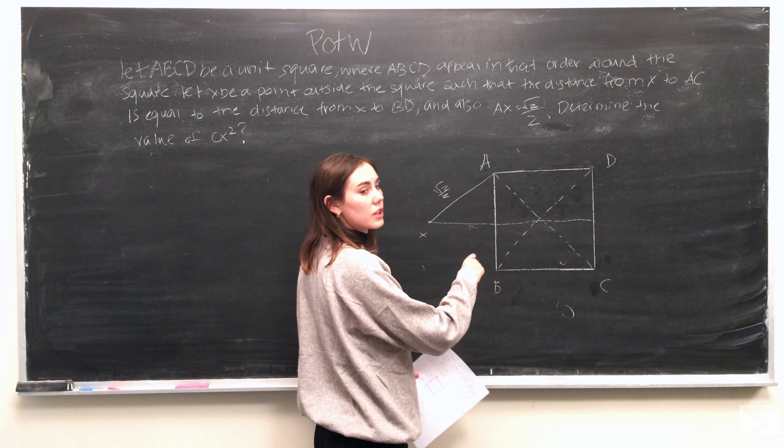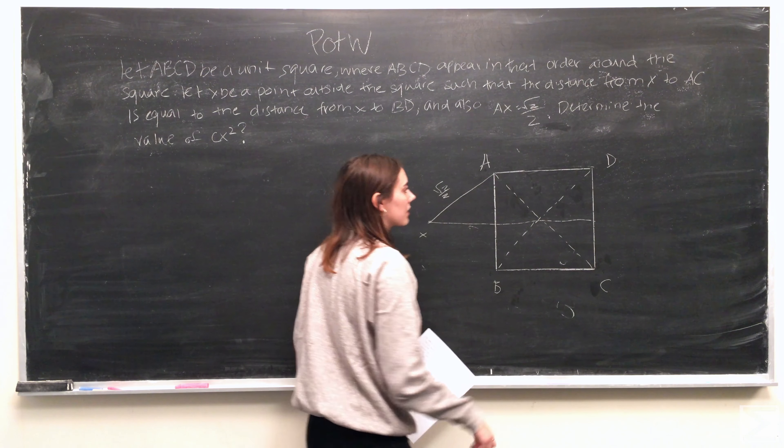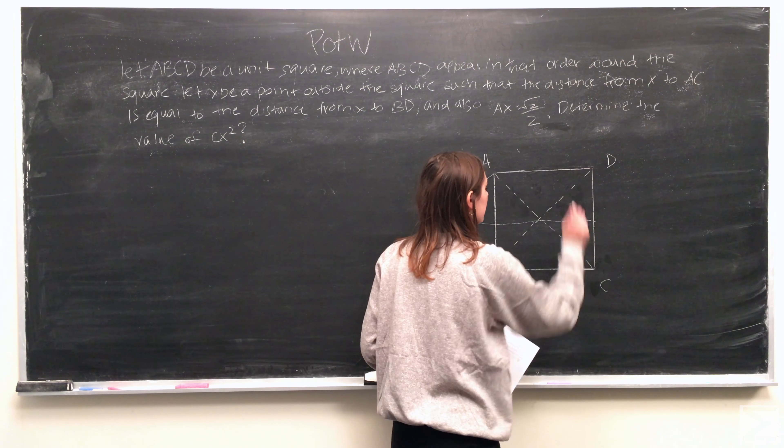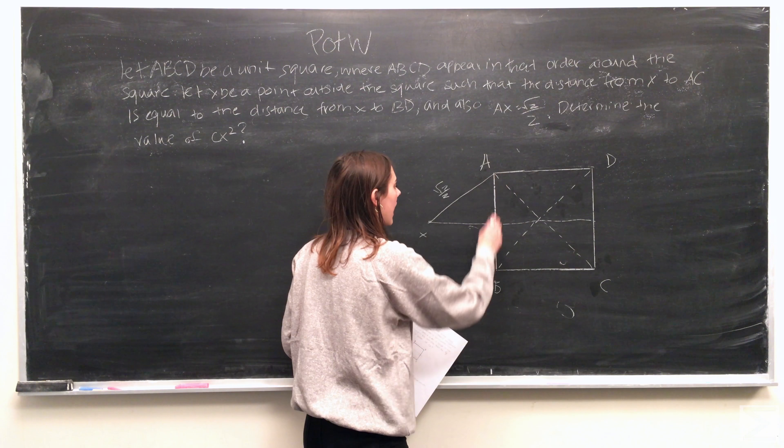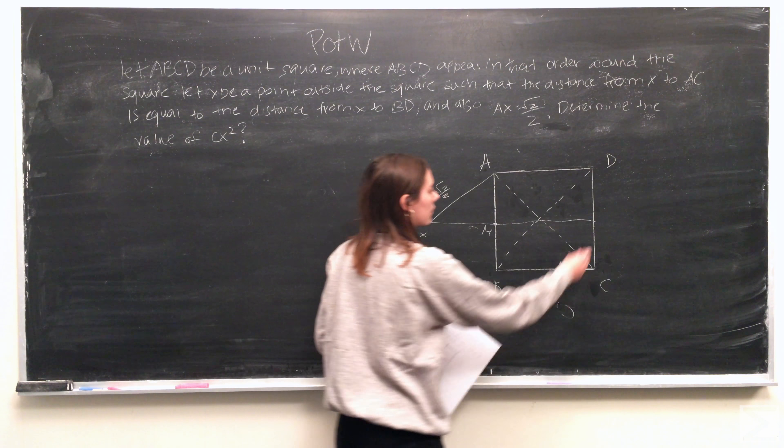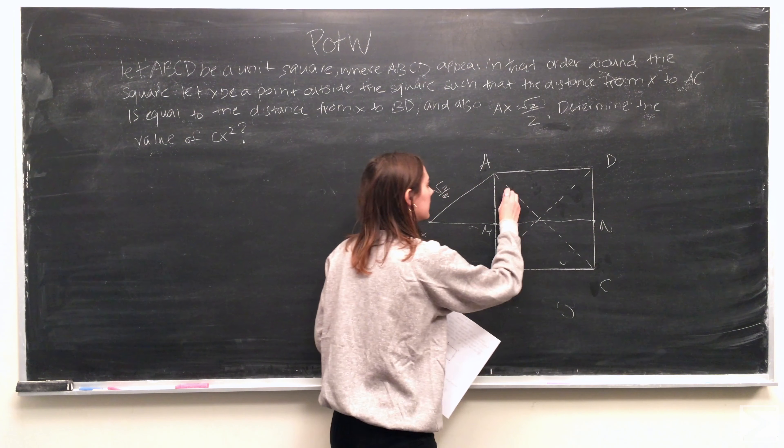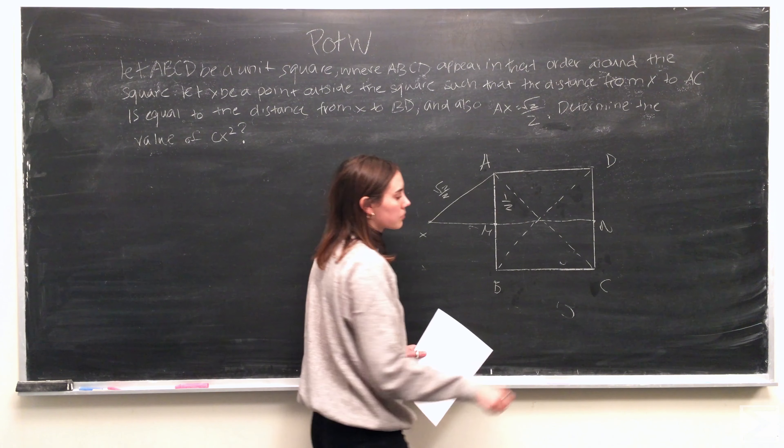And if we drop a line from x through the center of the square, what you'll notice is that this line is actually the perpendicular bisector of ab and the perpendicular bisector of dc. So what that tells us is that this point, if we call this point m and we call this point n, am is equal to 1 half, and nc is also equal to 1 half.